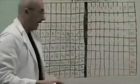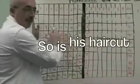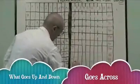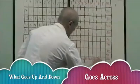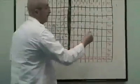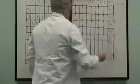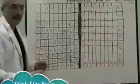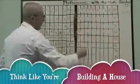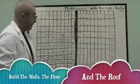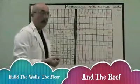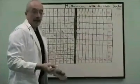You can see even when I take my time, my handwriting is still horrible — so that wasn't an excuse because I was going so fast, it's just horrible. What goes up and down goes across. I've done the ones, I've done the tens. I always tell people the way to remember this is to think you're building a house. You build the walls, a floor, and a roof. You get that in place, the rest falls in place very quickly.